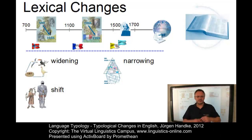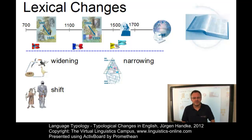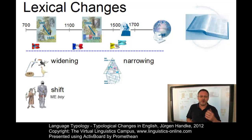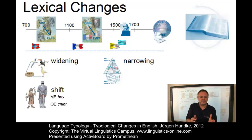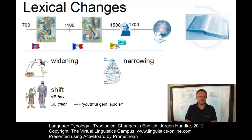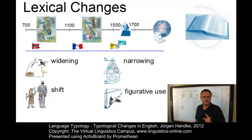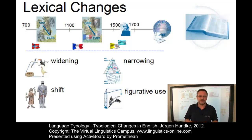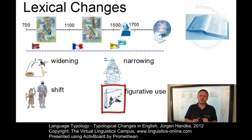Semantic shift is a process where a word completely loses its original meaning and acquires a new meaning — a lexeme moves from one set of circumstances to another. For example, when Middle English acquired the word 'boy', the Old English form 'cniht' (present-day 'knight') shifted its earlier meaning of 'boy' or 'male youth' to the much narrower meaning 'youthful gentleman soldier'. If a shift in the meaning of a lexeme is based on analogy or likeness between things, a process of figurative use is involved — for instance, the word 'crane' used in its original biological sense and then analogically to denote a certain vehicle.